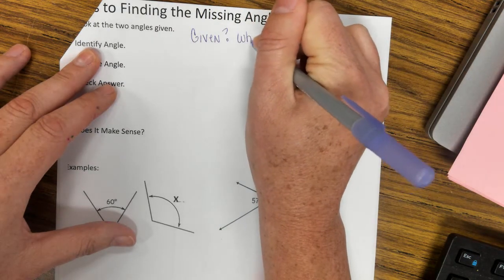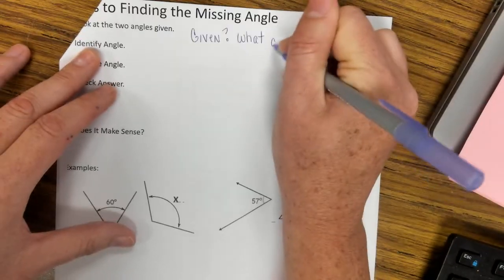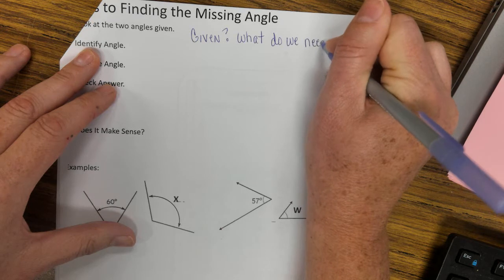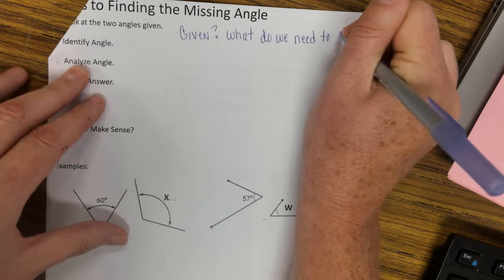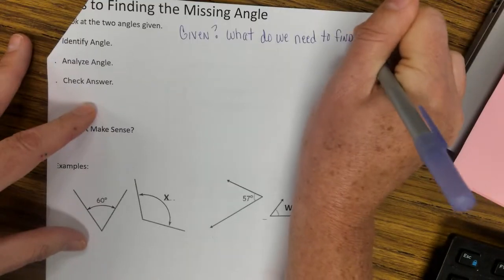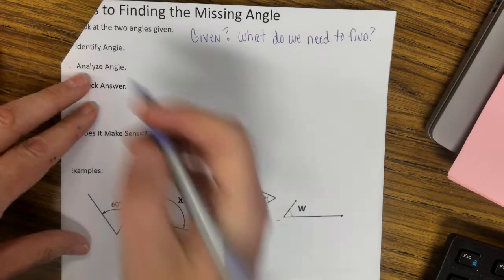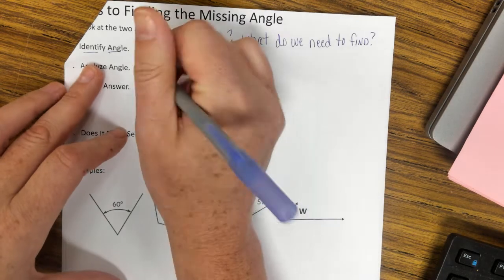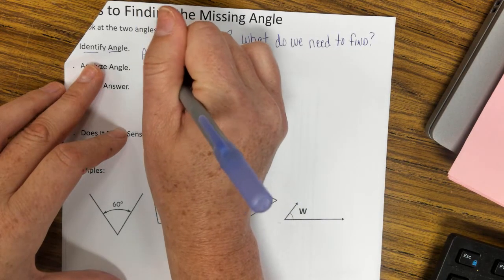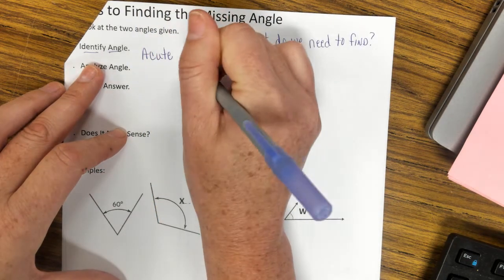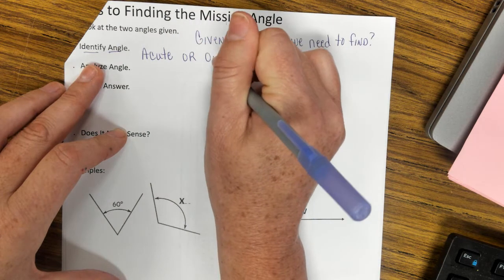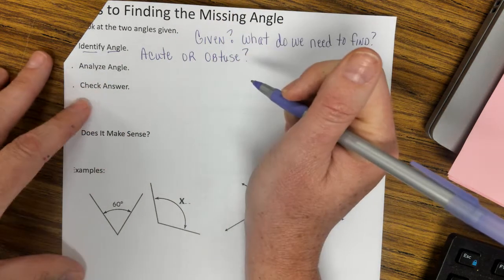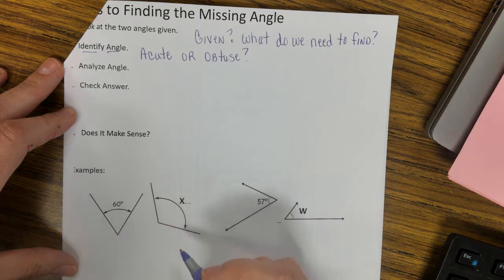We're going to think about what do we need to find. We're going to look at some examples below in just a second. We're going to identify the angle and ask ourselves are they acute or are they obtuse, or do we have one of each. We're going to analyze the angles.